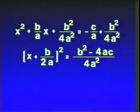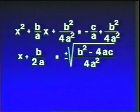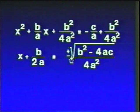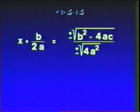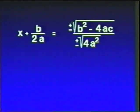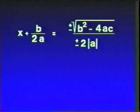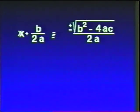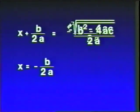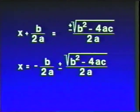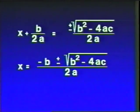Applying the square root property, x plus b over 2a equals plus or minus the square root of b squared minus 4ac over 4a squared. The square root of 4a squared is 2a. Subtracting b over 2a from both sides and combining fractions with common denominator 2a, we arrive at the quadratic formula: x equals negative b plus or minus the square root of b squared minus 4ac, all over 2a.